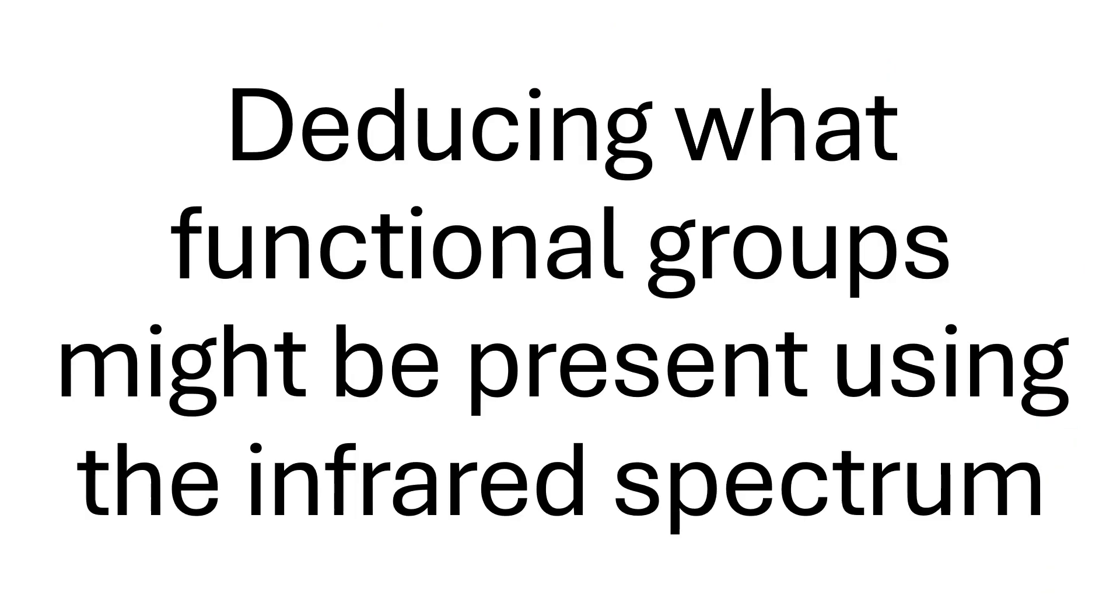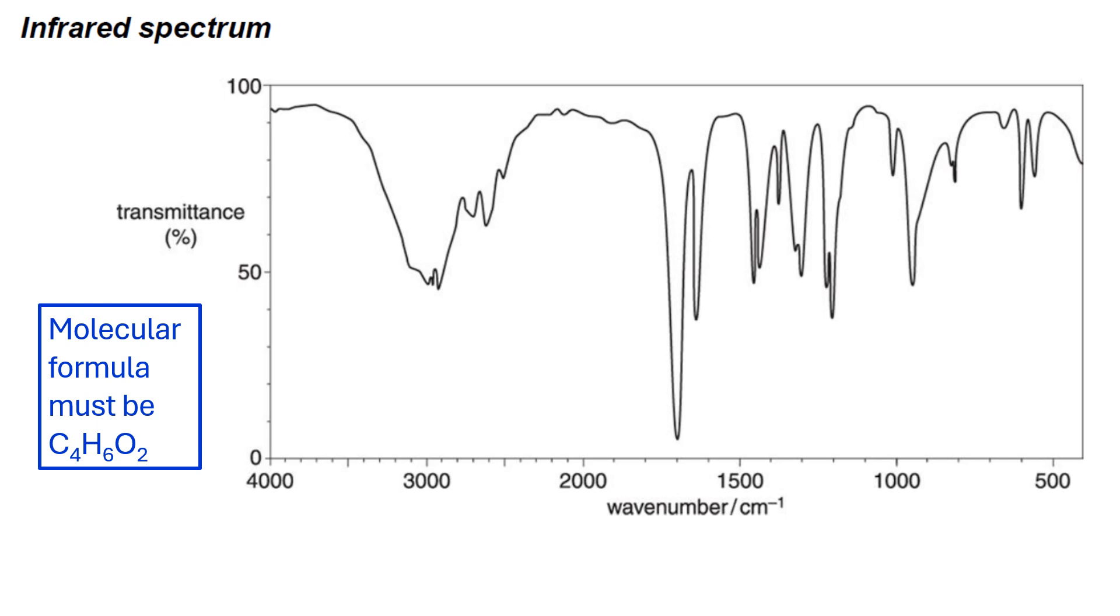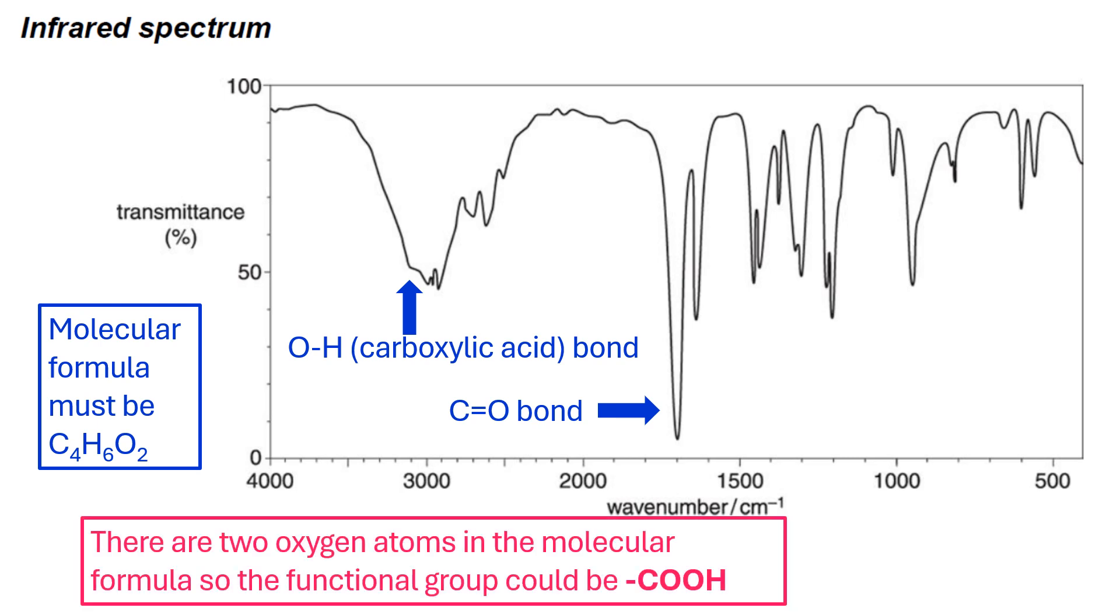That conclusion can be taken to the infrared spectrum. In the infrared spectrum you've got two significant peaks, one representing a C double bond O and one representing an O single bond H. This is a wide peak, a broad peak, so we're going to say it's a carboxylic acid. From this we can take that there's two oxygen atoms in the molecular formula, so the functional group could indeed be COOH.